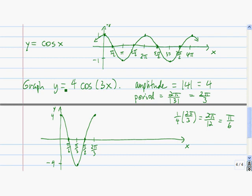So that's one cycle of 4 cosine of 3x. Let's just quickly graph another cycle. So right here we have two cycles of the graph of y equals 4 cosine of 3x.